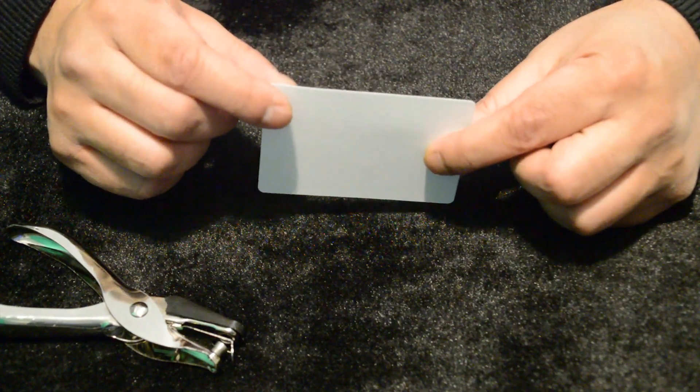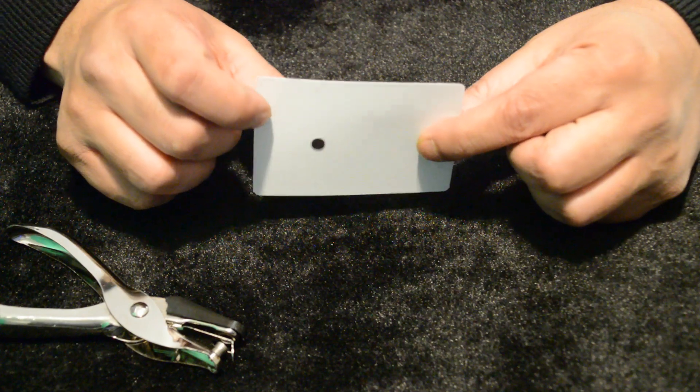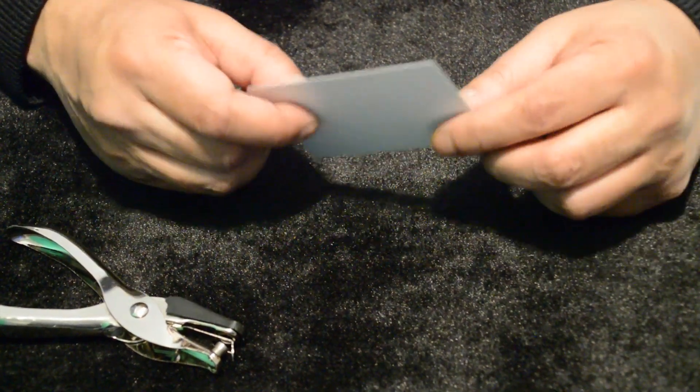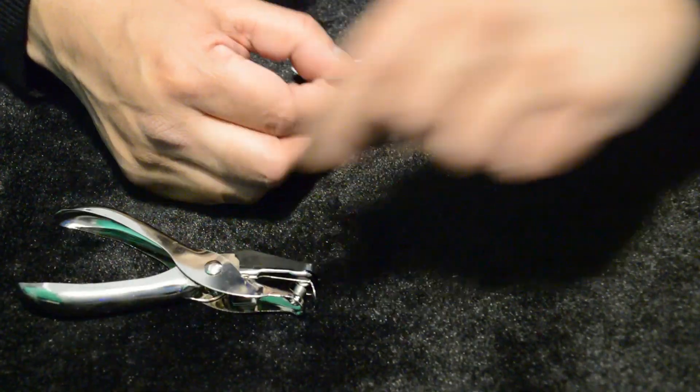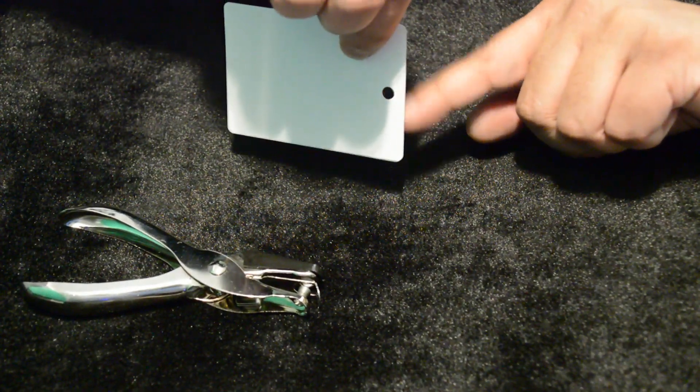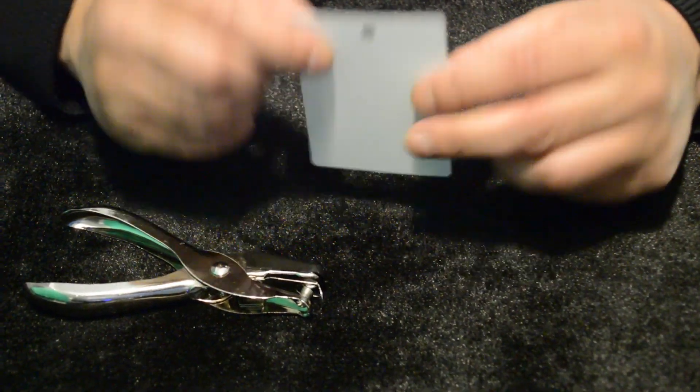You'll notice that when you move your thumb, the hole will go along with it. Next, make a hole in the card. Always a good idea to flash your finger behind to show that it's a hole. You can show it on both sides.